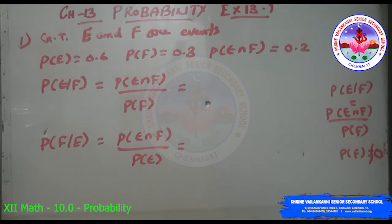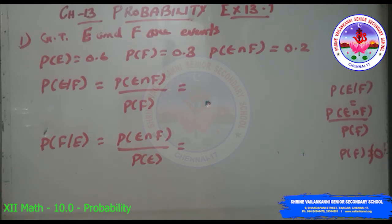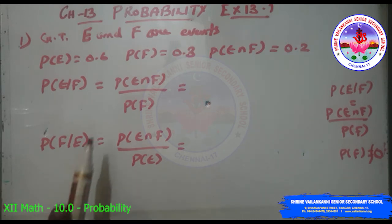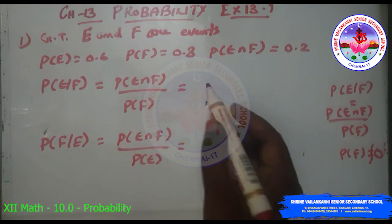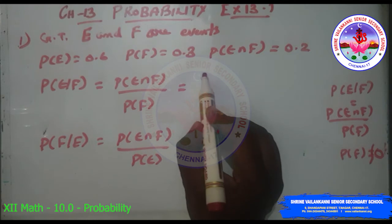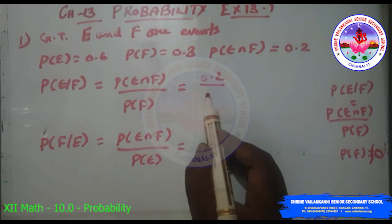Exercise 13.1, Question 1. This exercise is based only on conditional probability. Given that E and F are events such that P(E) = 0.6, P(F) = 0.3, and P(E∩F) = 0.2, find P(E|F) and P(F|E). For P(E|F): using the formula P(E|F) = P(E∩F)/P(F) = 0.2/0.3.